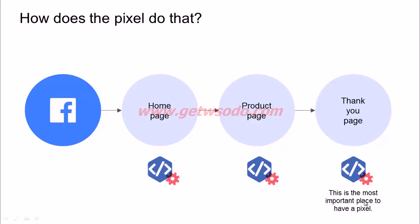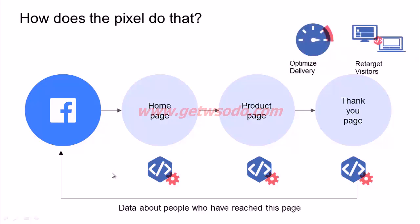This is the most important place to have your pixel because Facebook would then know that somebody clicked on a Facebook ad, came to your website and converted — which is when they land on the thank you page. Apart from tracking conversions, this will also pass data back to Facebook, telling it what kind of people have actually reached your thank you page — basically what kind of people are most likely to convert. Once Facebook keeps getting this data, it will automatically start showing your ads to more such people, optimizing your ad delivery.